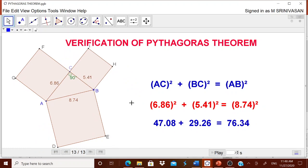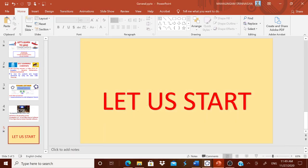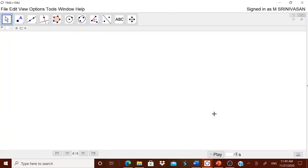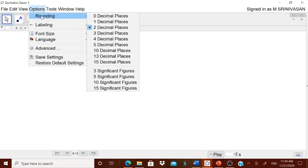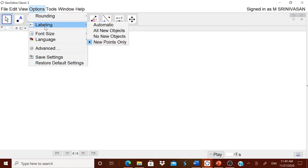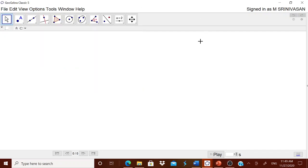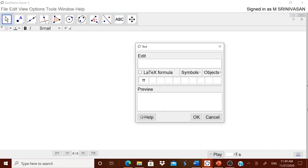Let us try to make this worksheet from scratch. For that, I have selected GeoGebra Classic 5 worksheet and selected geometry view and in options rounding up to two decimal place or one decimal place whatever you want. Labeling is new points only.